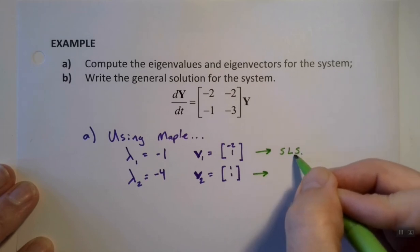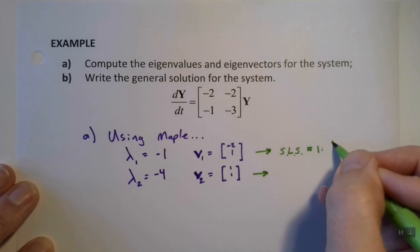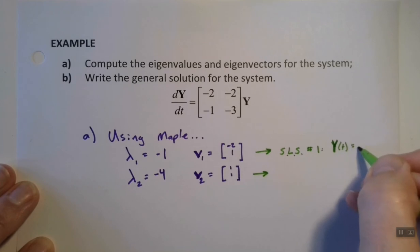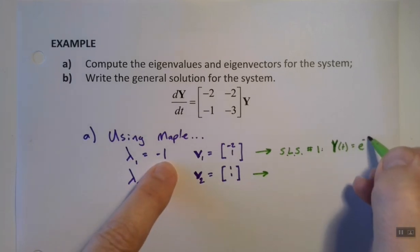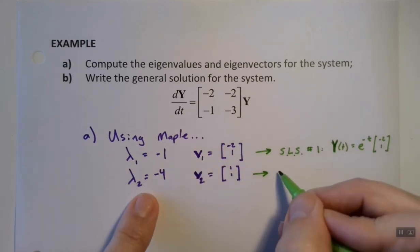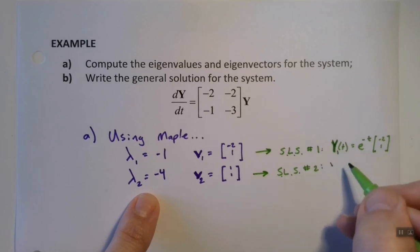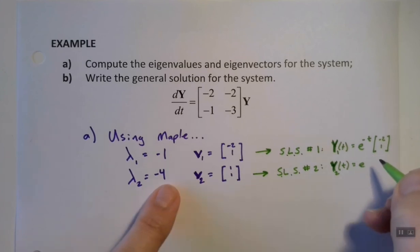So for this one, straight-line solution number 1 is going to be great big Y of t. Remember, this is a matrix. And it's equal to e to the power negative 1t times its eigenvector. And the straight-line solution number 2, it's going to be, oh sorry, number 1 there.